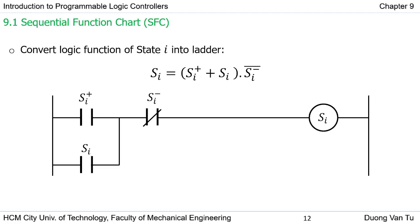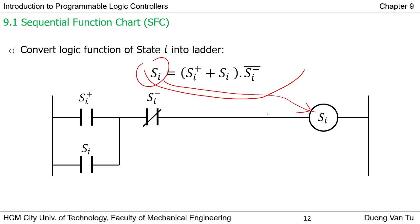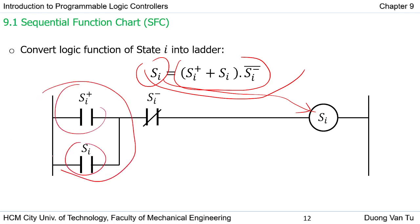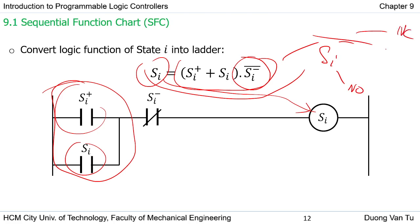Now we see how to convert the logical function of state I into a ladder diagram. From the logical equation, we make the output of the ladder diagram, then construct the input conditions. We have three inputs: SI-plus in parallel with SI, and this is in series with the inversion of SI-minus. For SI-minus we use a normally open contact, but for the inversion of SI-minus we use a normally closed contact.